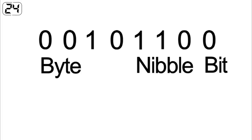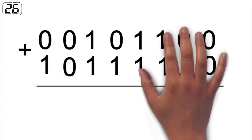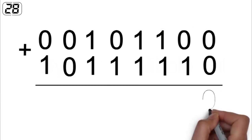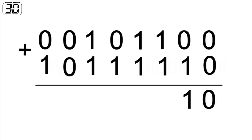Adding two 8-bit integers together, we see that 0 plus 0 equals 0, 0 plus 1 equals 1, 1 plus 1 is 2, which in binary is written as 10. So we drop a 0 and carry a 1.